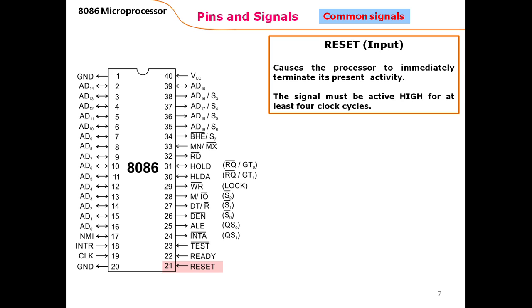The last pin on the right side, pin 21, is RESET. This pin is also active high, and it causes the microprocessor to immediately terminate its present activity. The signal must be active high for at least four clock cycles to get into the reset state. The reset state means the microprocessor terminates its present activity — for example, if it is executing any instruction or program, it terminates the execution.